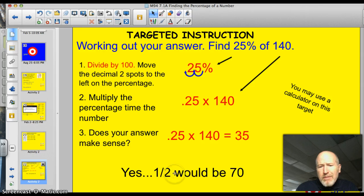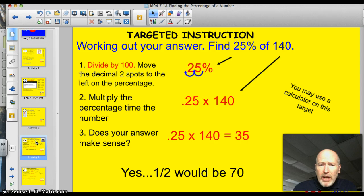Does that make sense? Yeah. Well, you know, a half of 140 would be 70, so 35 as a quarter, that makes total sense. Now, you're going to be able to use a calculator on this target, and maybe I'll do that on the next problem so you can get the hang of it here.